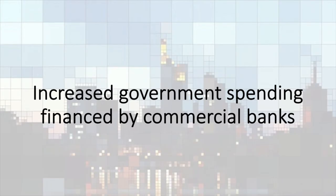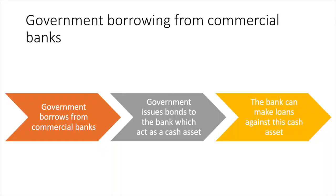The government could also finance their deficit by borrowing from commercial banks. This process would also cause an increase in the money supply. If the government borrows from commercial banks by issuing short-term securities, the security can serve as a cash asset against which the commercial bank can make additional loans. As a result, the government gets a loan and issues a security to the lending bank, which can be used as an asset equivalent to cash against which further loans can be generated.